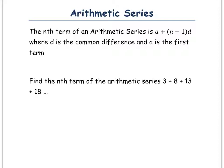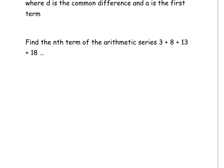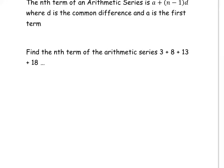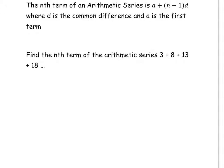Let's have a look at a quick example. Find the nth term of the arithmetic series 3 plus 8 plus 13 plus 18. The first term is 3, so we're going to write down that A equals 3. And the D, the common difference, is going to be 5.